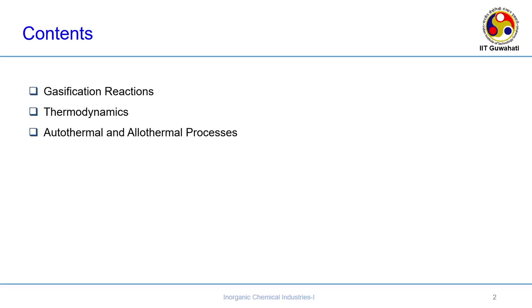In coal gasification, we will primarily cover what gasification reactions are involved to gasify the coal, then the thermodynamics of the process - the effect of increased pressure, whether it is a reducing or oxidizing atmosphere. In the previous lecture, we discussed the gasification of methane by steam reforming, where our primary aim was to only produce syngas - a mixture of carbon monoxide and hydrogen.